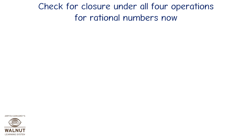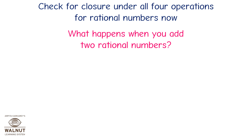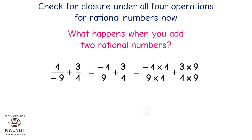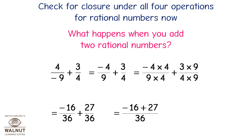Let's check closure under all four operations for rational numbers. What happens when you add two rational numbers? 4 upon minus 9 plus 3 upon 4: rewriting as minus 4 upon 9 plus 3 upon 4, we get minus 16 upon 36 plus 27 upon 36, which equals 11 upon 36 — a rational number.